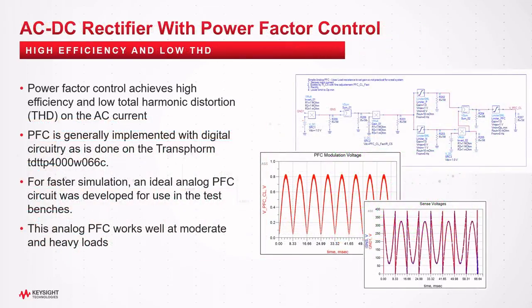The design needs power factor correction to get efficiency, low total harmonic distortion, and compliance with standards. Transform uses a digital power factor correction circuit in their reference design. But to speed up simulation, we designed an ideal PFC analog circuit and put it in the test bench, replacing the digital circuit in the original design. The substitution works well at most moderate to heavy loads. This is an example of things you can do in PE Pro to get the best trade-off of simulation time against fidelity. We will come back to this point in a few minutes.